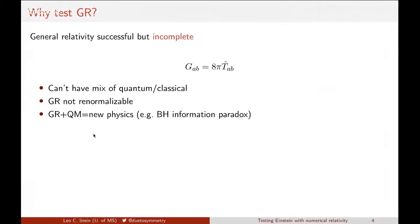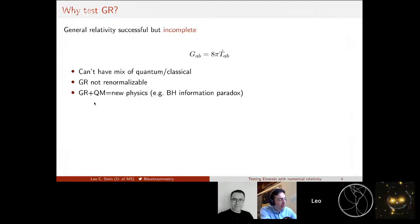Let me tell you why I care about testing GR. These are Einstein's field equations — on the left-hand side we have the curvature in spacetime describing geometry, and on the right-hand side we have matter creating energy and momentum flow. I put a little hat on top of T because all of the matter we understand is made out of quantum fields — the right-hand side is an operator, and the left-hand side is classical. This doesn't make sense. If you try to make GR into a quantum theory, you find that it's not renormalizable. And the most obvious place where you see that there must be new physics is in the black hole information paradox.